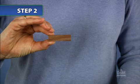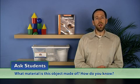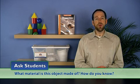Students may also recall from Activity 11 that some metals are magnetic. Hold up a sample of wood and ask students to find a similar object on their trays. Again, ask students, what material is this object made of? How do you know?